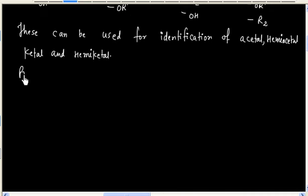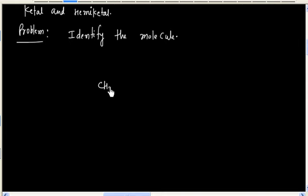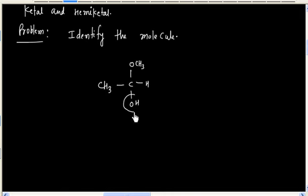So let us try this problem. We have to identify the molecule. Now this is a hemiacetal because it has an OH group, it has a hydrogen, and it also has an OCH3 group. So this is a hemiacetal.